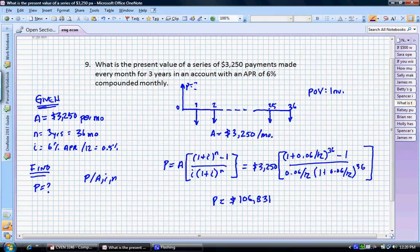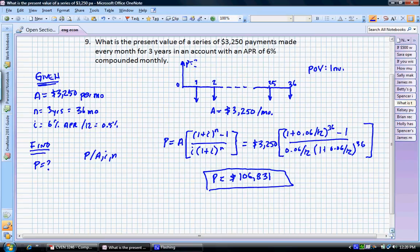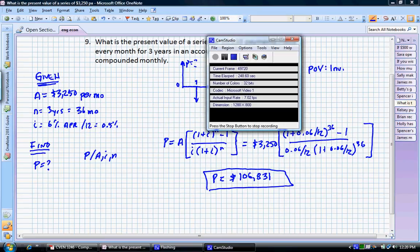What that tells us here is that the present value of $3,250 payments for three years, every month for three years, with an interest rate of 6% compounded monthly, is going to give us a present value in that account of $106,000. And that makes sense. Remember, we can't use the factor table in this one because we're dealing with a half a percent per month.